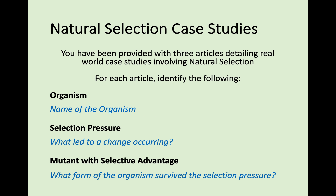In class we look at some case studies of natural selection. It's important to remember that a selection pressure is what led to a change occurring in the population, and the mutant with a selective advantage is the fittest — the best-suited organism that survived.